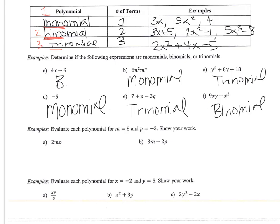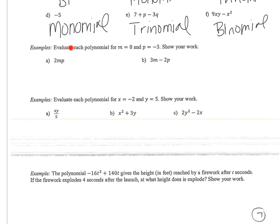And then I start evaluating each polynomial. So m equals 8 and p equals negative 3. So we're going to plug in m is 8 and p is negative 3. So remember, whenever you have a negative, put it in parentheses. So now you do order of operations. 2 times 8 is 16. 16 times negative 3 is negative 48.